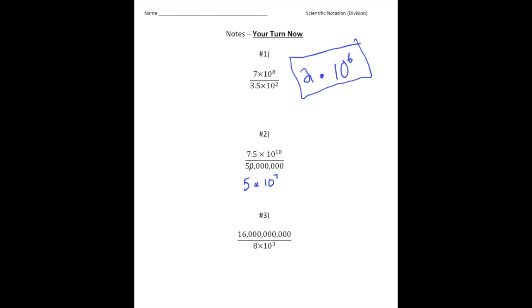Now, 7.5 divided by 5 gives you 1.5 times. And then 10 to the 10th power divided by 10 to the 7th power is 10 to the 3rd power. That's number 2.